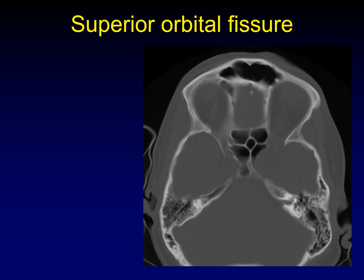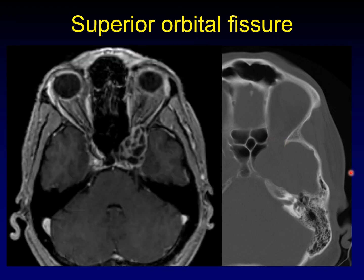The third cranial nerve extends from the cavernous sinus through the superior orbital fissure. When you see enlargement of the superior orbital fissure, think about the third cranial nerve. In this case, the MRI shows a heterogeneously enhancing mass with areas of non-enhancement and areas of brisk enhancement. This enhancement characteristic is typical of a schwannoma — and that's because this is a schwannoma of the third cranial nerve extending through the superior orbital fissure.